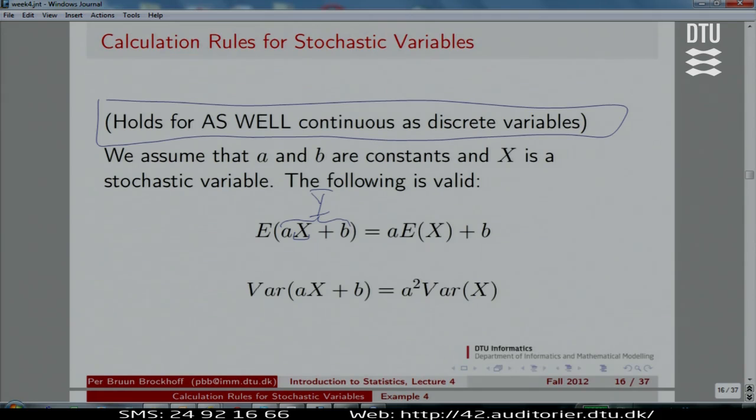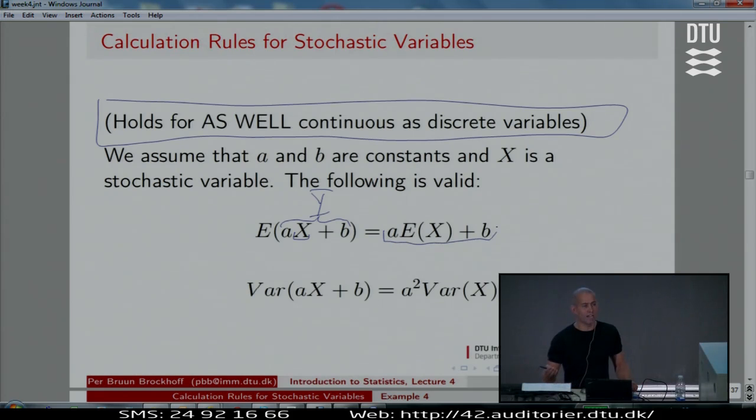We can find the mean of a new thing by applying the same linear transformation to the mean of the original thing. So, the mean of a linear function of X is the linear function of the mean of X. That's the wording of it. I think it's a simple rule that most of us probably would apply without thinking about it in this context.